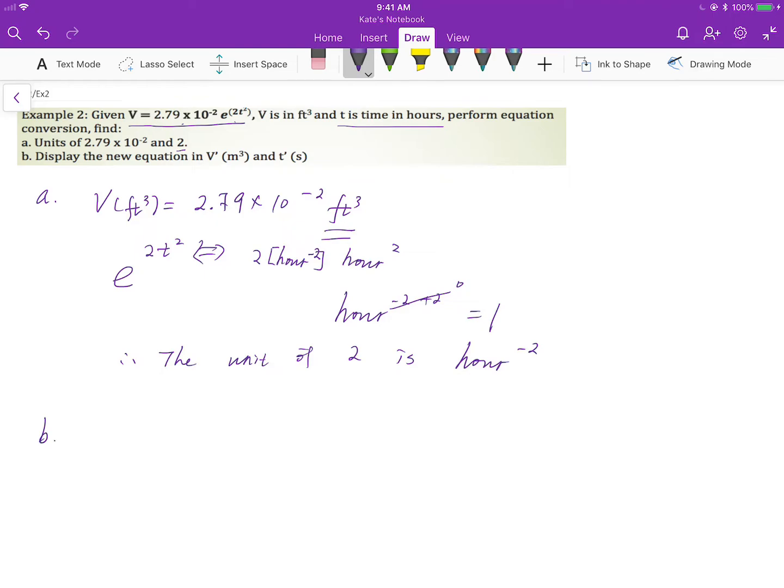Part B. In part A, we found out the unit for this group and this group. Then you can convert that to the unit in the second problem. Then you go ahead and write down what is known. This is cubic feet. Then we have to convert that to cubic meter.